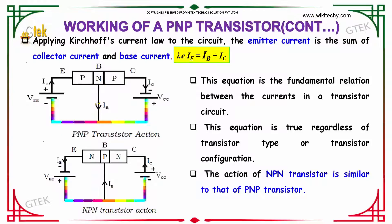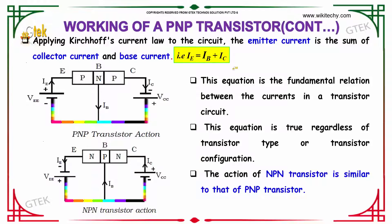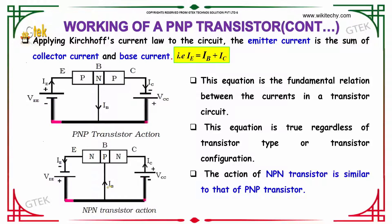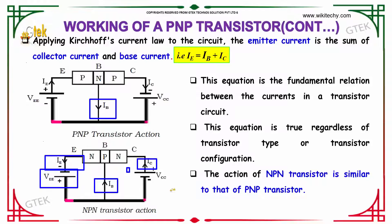This equation is true regardless of transistor type or transistor configuration. The action of an NPN transistor is very similar to the PNP transistor; the difference is that the direction of the current is reversed, and this is due to the polarity of the batteries.